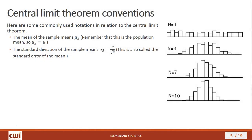There are some conventions in place for how we use the Central Limit Theorem. The mean of the sample means is typically represented as mu sub x-bar. Remember that this is the population mean, so mu sub x-bar is simply the same thing as mu, because the mean of the sample means is an unbiased estimator — it targets the population mean well. The standard deviation of the sample means is denoted sigma sub x-bar, which equals sigma divided by the square root of the sample size. This value is also called the standard error of the mean.